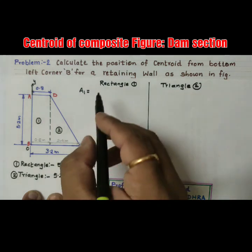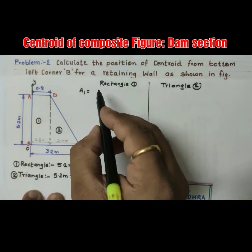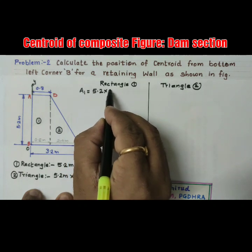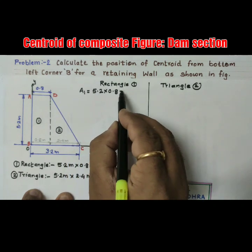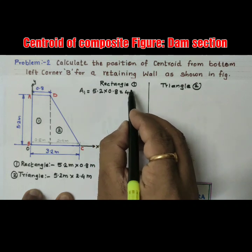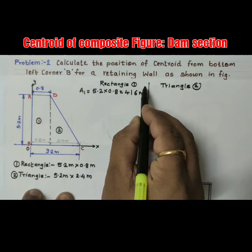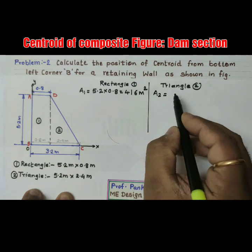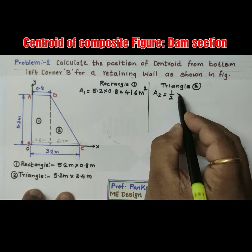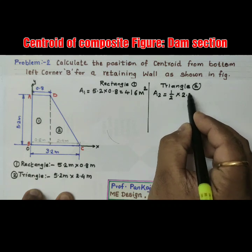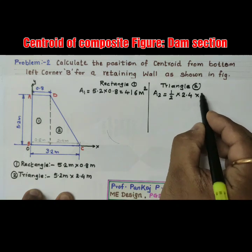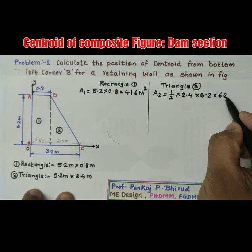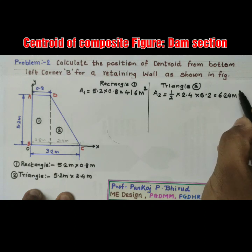Area A1: the first part is a rectangle, so A1 = 5.2 × 0.8 = 4.16 m². Area A2: the second part is a triangle, so A2 = ½ × base × height = ½ × 2.4 × 5.2 = 6.24 m².